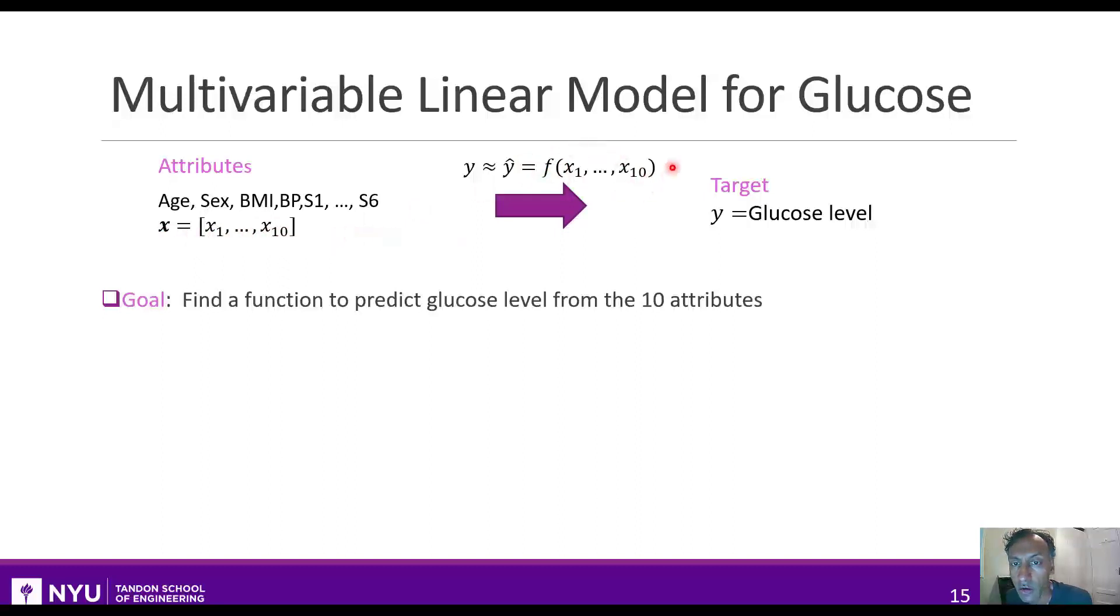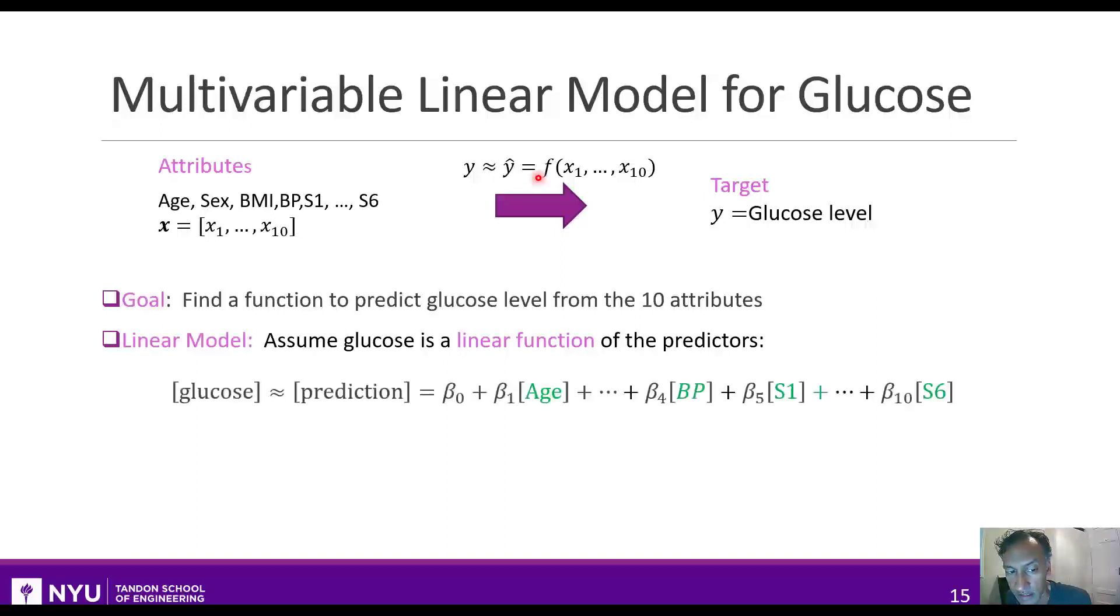There are a large number of such functions, particularly once you start thinking about multivariable functions. A linear regression model is a particular case where we assume a simple linear function. In our glucose case, it's just like this: our target value is our glucose, and we're going to make a prediction.